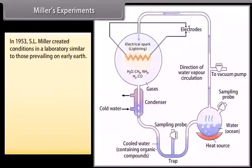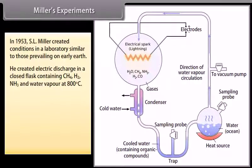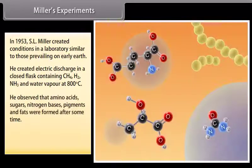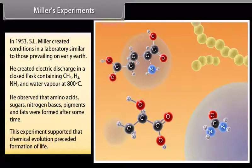Miller's experiments. In 1953, S.L. Miller created conditions in a laboratory similar to those prevailing on early earth. He created electric discharge in a closed flask containing CH4, H2, NH3 and water vapor at 800 degrees Celsius. He observed that amino acids, sugars, nitrogen bases, pigments and fats were formed after some time. This experiment supported that chemical evolution preceded formation of life.